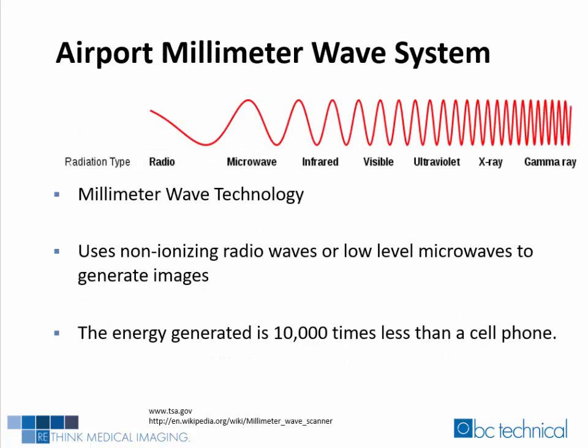The other technology used for airport screenings is called millimeter wave technology. Images are created using non-ionizing radio waves or low-level microwaves. With active scanners, the millimeter wave is transmitted from two antennas simultaneously as they rotate around the body. The wave energy reflected back from the body or other objects on the body is used to construct a three-dimensional image, which is displayed on a remote monitor for analysis. The energy generated from these systems is 10,000 times less than a cell phone.